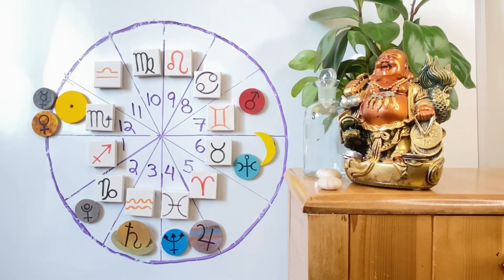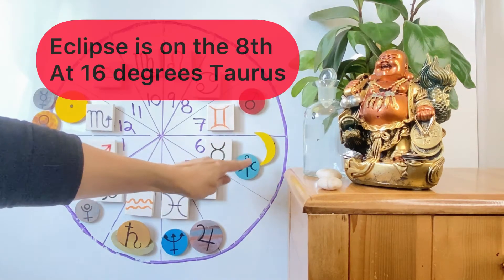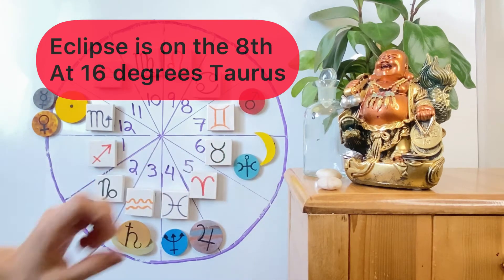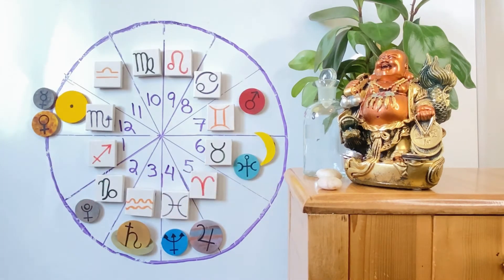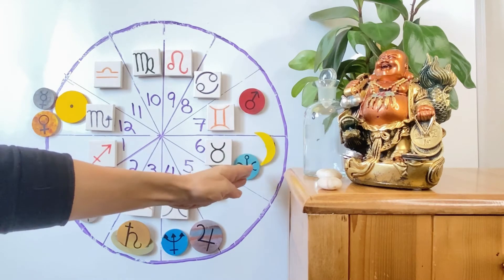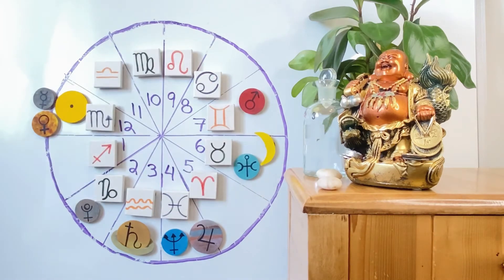So what I really want to unpack this month is this full moon lunar eclipse going on in Taurus, especially because full moon lunar eclipses bring a really particular energy in and of themselves. But this one is going to be conjunct Uranus and of course opposing the sun, Venus and Mercury in your 12th house in Scorpio.